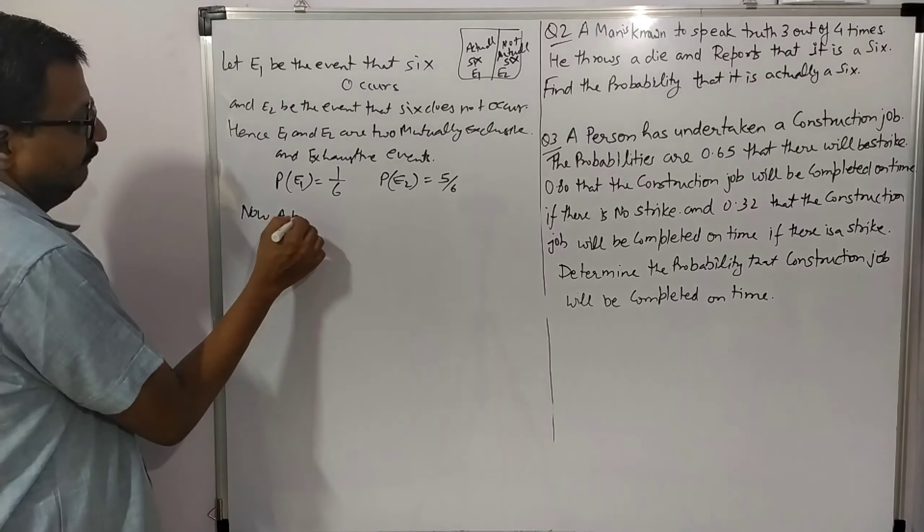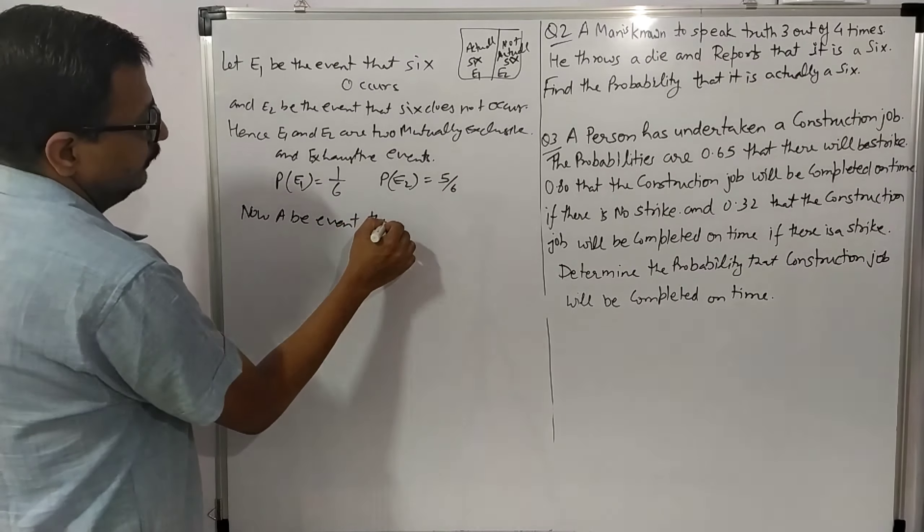Let A be the event that the man reports 6 on the die. P(A|E1) is the probability that the man reports 6 when 6 actually occurs — he speaks truth, so P(A|E1) = 3/4.